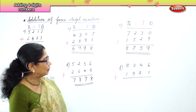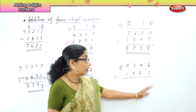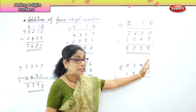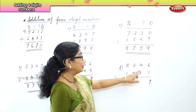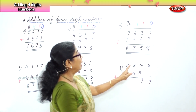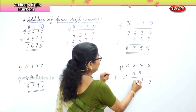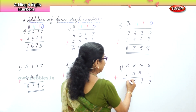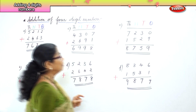Finally, you have the last sum: eight thousand three hundred and forty-six plus one thousand five hundred and thirty-one. In the ones place, add the ones first — six ones plus one one is seven ones. In the tens place, four tenths and three tenths — four plus three is seven tens. In the hundreds place, three hundreds and five hundreds — five plus three is eight hundreds. And in the thousands place, eight thousand and one thousand makes nine thousand. So the answer is nine thousand eight hundred and seventy-seven.